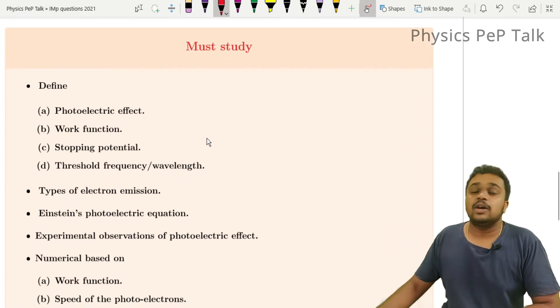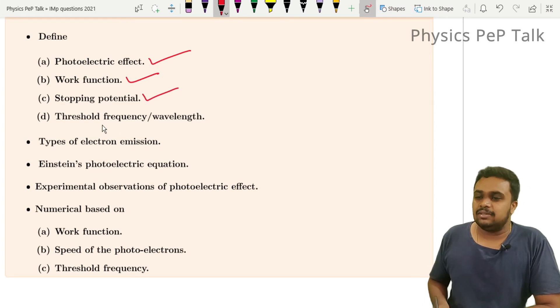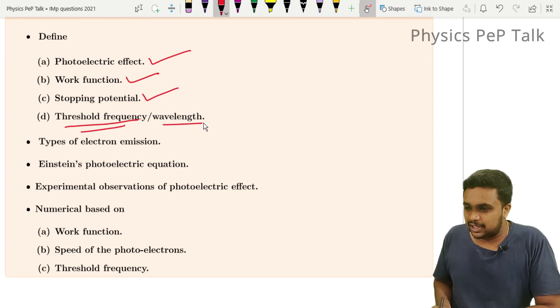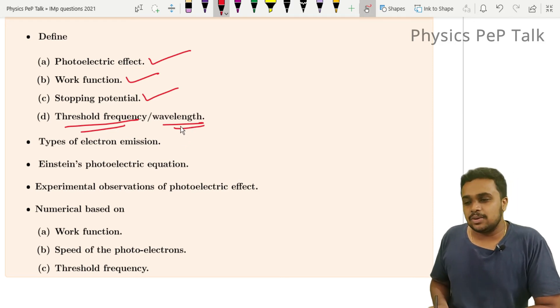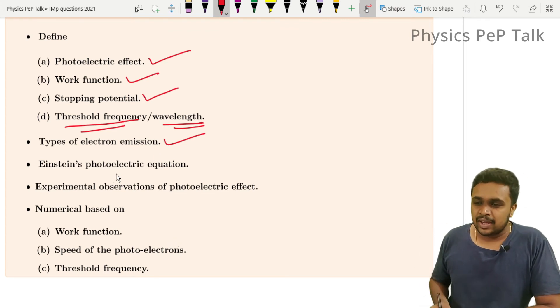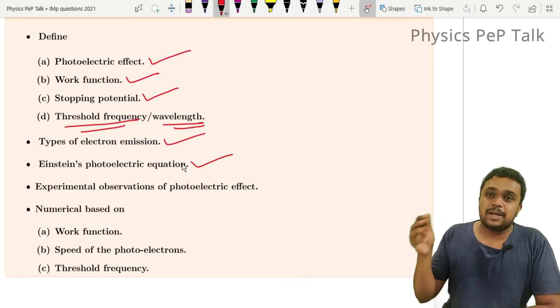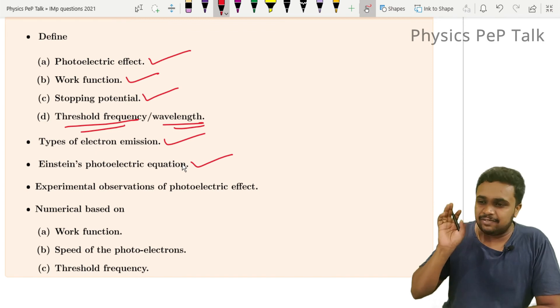Must-read topics from this chapter, one mark questions. Define photoelectric effect. Define work function. Define stopping potential. Define threshold frequency or threshold wavelength. What are photoelectrons. Types of electron emission. This type is called. This is very important, photoelectric effect though.